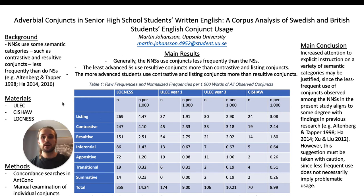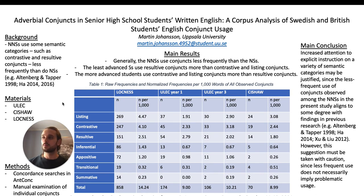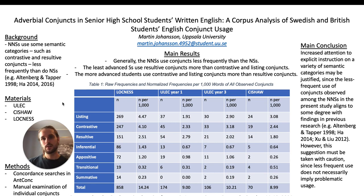And what might this mean for language teachers? One possible implication might be that language teachers ought to address variability in conjunct usage in the language classroom, so as to help students learn to differentiate between a hasty, unsupported conclusion and a conclusion that is based on contrasted discussion. If successful, then perhaps students might be able to improve their overall argumentative abilities.